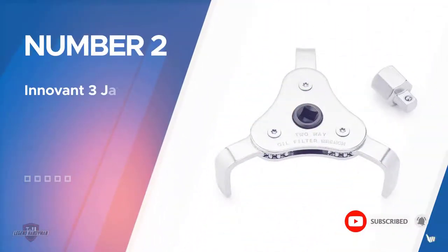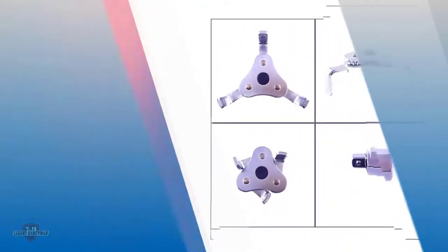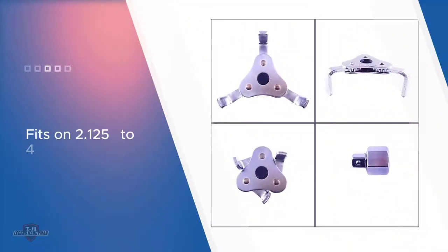Number two: In Vent 3 jaw oil filter wrench. This adjustable 3 jaw oil filter wrench from In Vent is another popular option. It fits oil filters ranging from 2.125 to 4.5 inches and works with either 3/8 or 1/2 drive ratchets. In Vent tools includes a 1/2 to 3/8 socket adapter and several pairs of black large nitrile rubber gloves, which is a nice bonus.